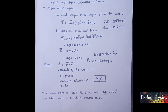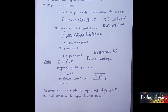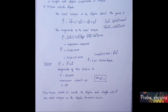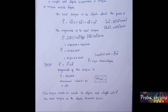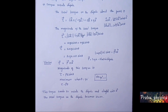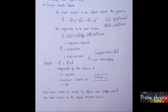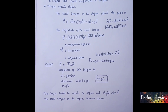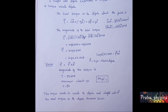Tau vector equal to a times qE sin theta plus a times qE sin theta.